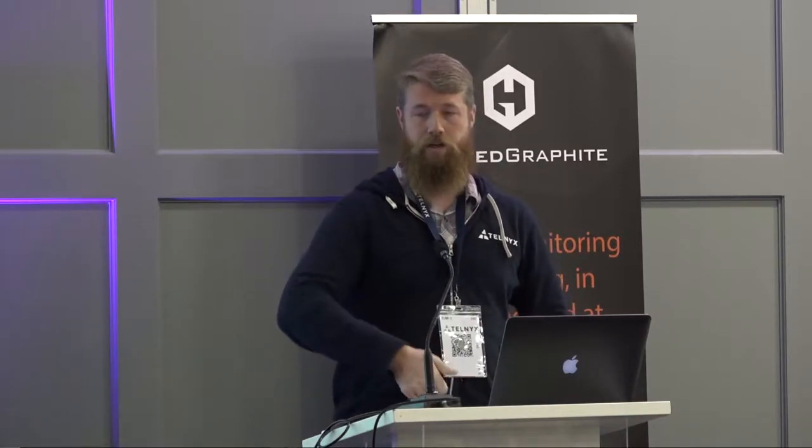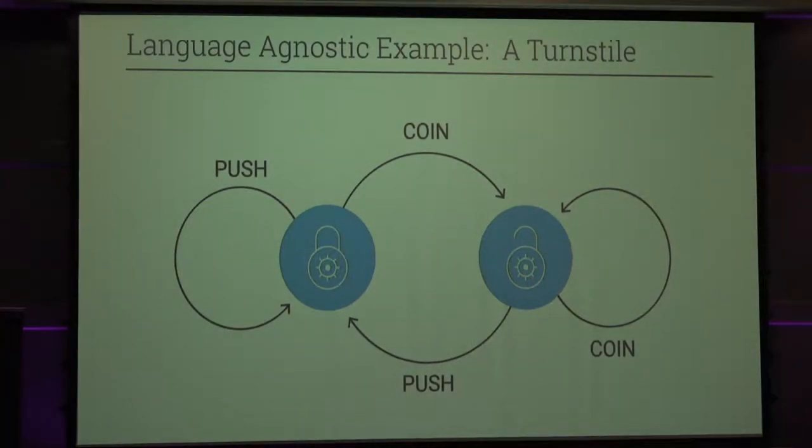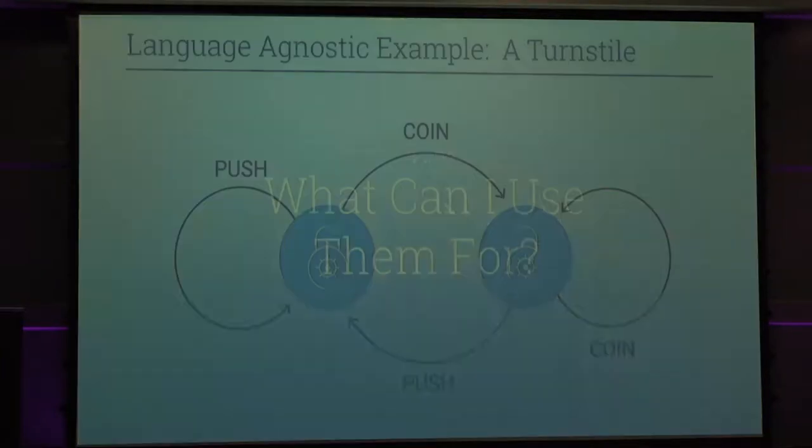The system's always in one state, and given some state, there are only so many other states you can transition to. You can think of this as a graph of states. A super simple example is a turnstile. If I go into a subway, the turnstile is locked. But if I put in a coin, it goes into the unlocked state. If I walk through it, it goes back to the locked state. If I put in a second coin, it still stays unlocked — it doesn't penalize me.